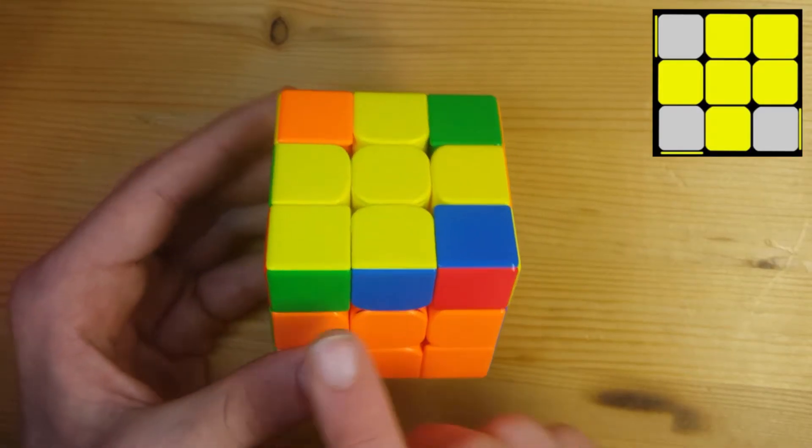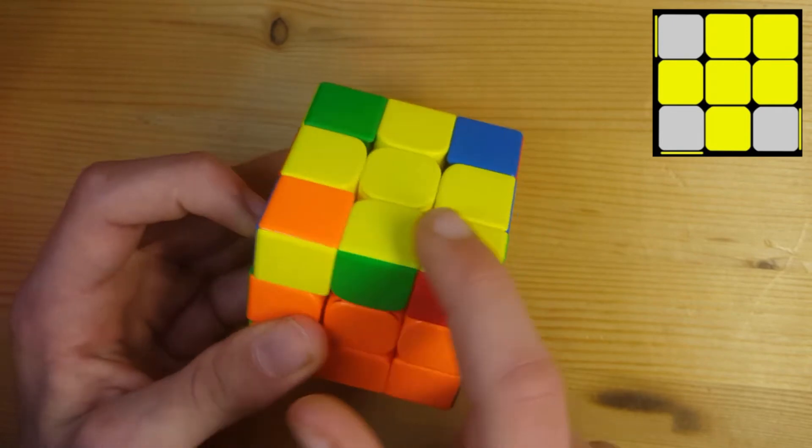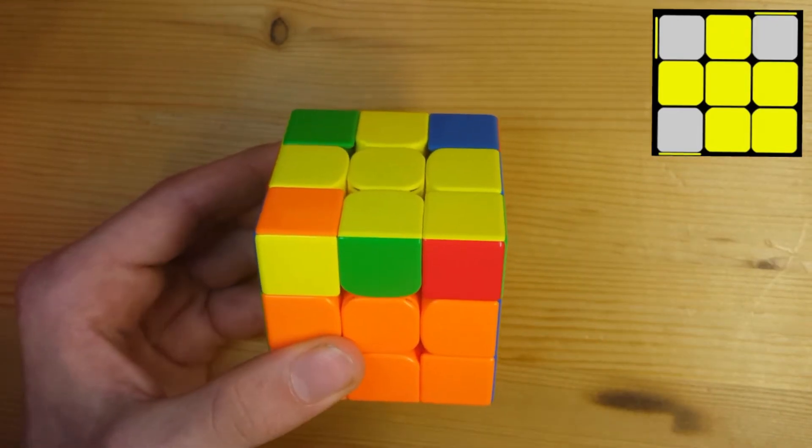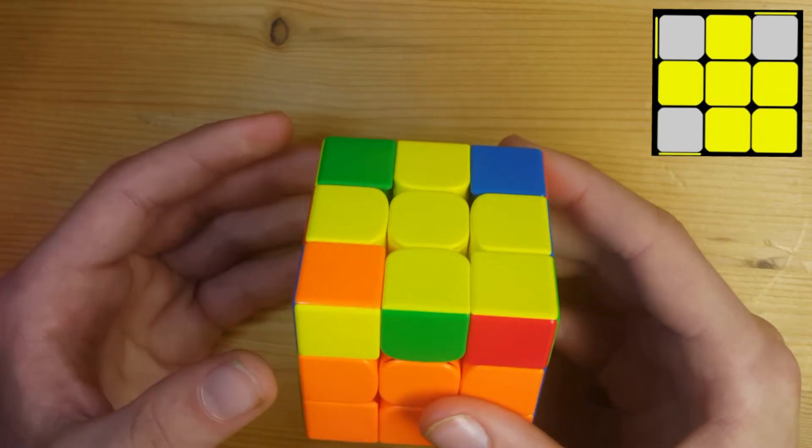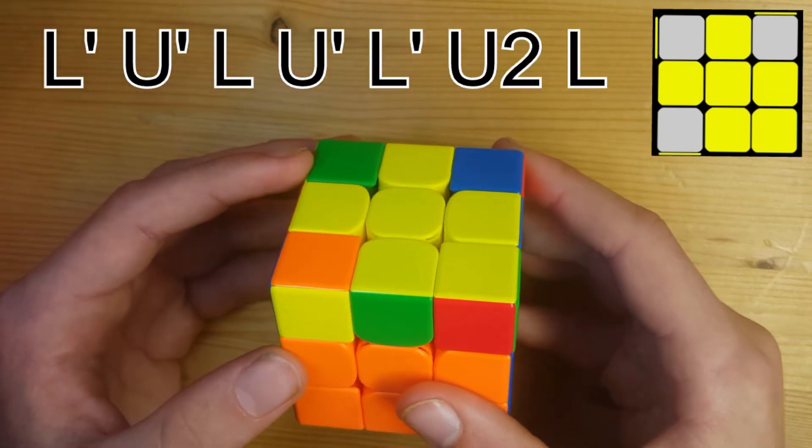For the Anti-Sune case you're going to put this yellow corner in the bottom right and then the yellow should face towards you. You're then going to do the same algorithm but with your left hand. It goes like this.